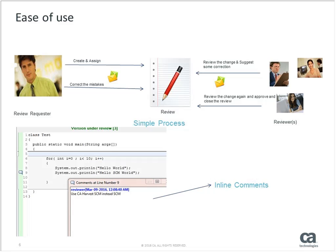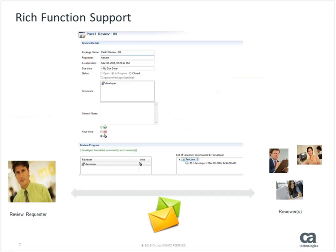This is the review information view. When you double-click on the review object, you can see all the information: package name, who the requestor is, the creation date, the due date, status, and the list of reviewers. We'll have a complete discussion about this during the demo.